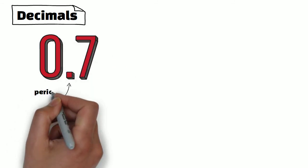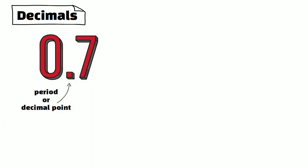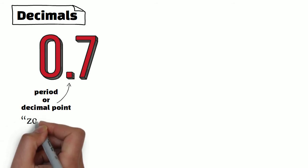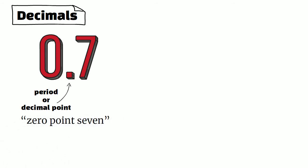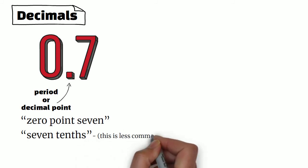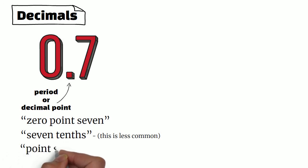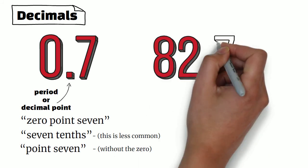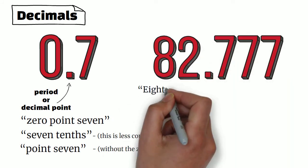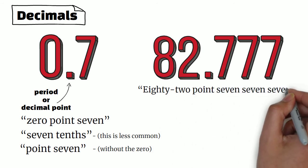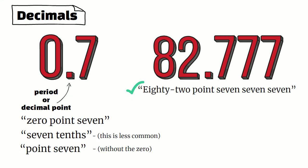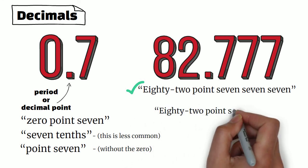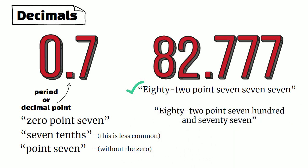Let's now move on to decimals. The dot in the middle is the period or the decimal point. We read it as '0.7,' or we could read it as a fraction: '7 tenths,' although this is less common. Sometimes the zero is omitted and we say '.7.' If the decimal number is longer, like '82.777,' we say each digit separately — we never say '82.777' as a fraction; this would be incorrect.